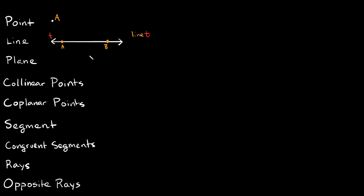Two other more common ways you'd probably see it: you could label it as line AB and put an arrow above it with two arrows, just like the line has, or you could mix these letters and just write it as BA — you could also call it line BA. Now, lines are just one-dimensional because they just head in one direction.